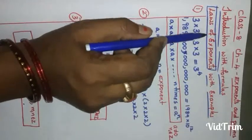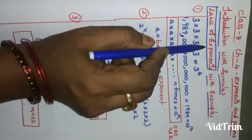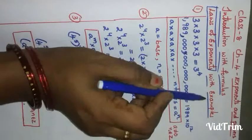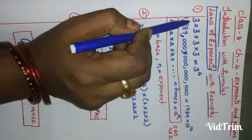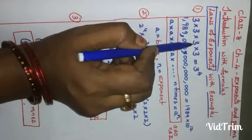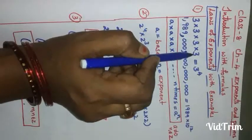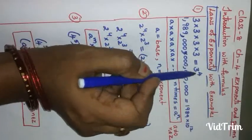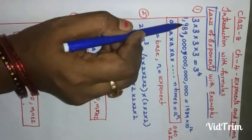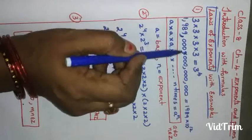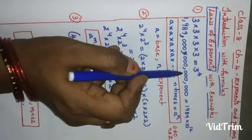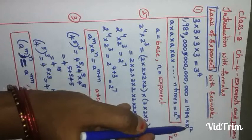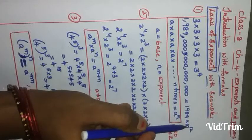We have already seen the laws of exponents in 7th class. Once again I am repeating how we got the formulas along with examples. See here, 3 into 3 into 3 into 3 — how many 3's are there? 3 is repeated 4 times, so it is 3 to the power of 4. We can't read this type of long numbers easily, so it becomes easier if we write in the exponential form or power form.